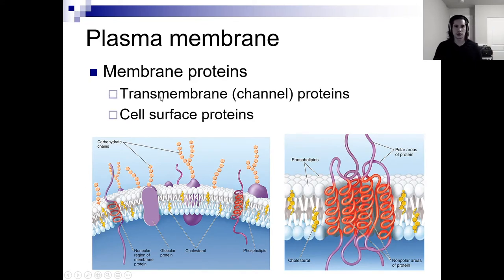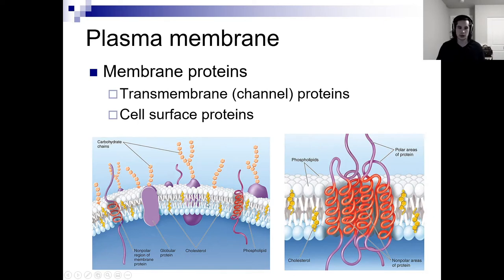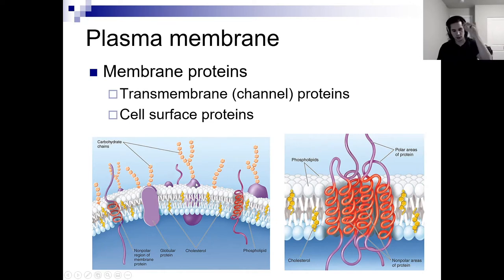Membrane proteins. Transmembrane proteins traverse the entire membrane — associate 'trans' with traverse. It's both outside of the membrane, within the membrane, and within the cell. Transmembrane or channel proteins hang out within your plasma membrane and let stuff move in or out of the cell. Then you also have cell surface proteins, which are embedded into the cell membrane but not necessarily traversing from outside to inside.